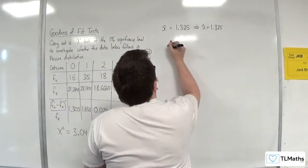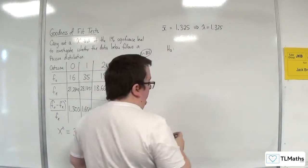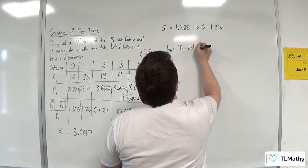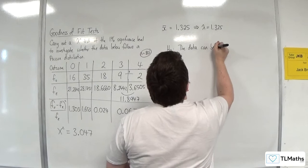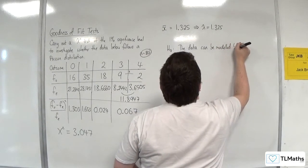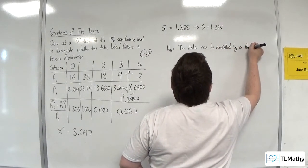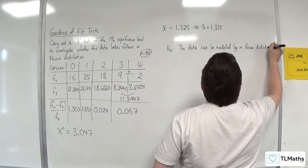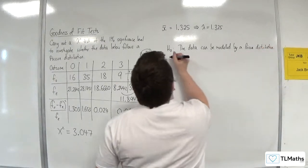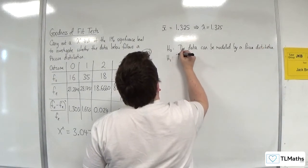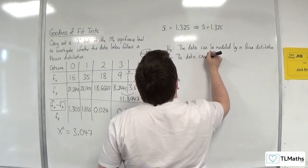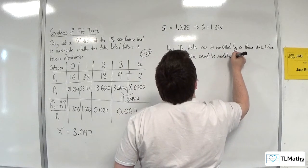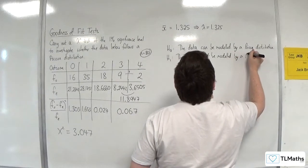So the test, the null hypothesis would say the data can be modelled by a Poisson distribution. H1, the data cannot be modelled by a Poisson distribution.